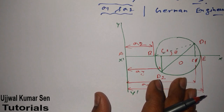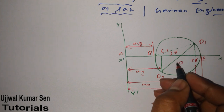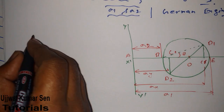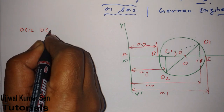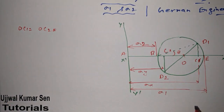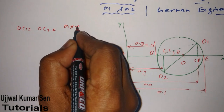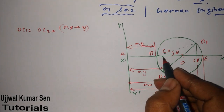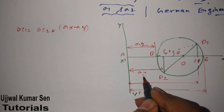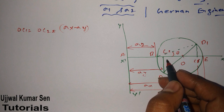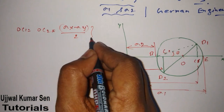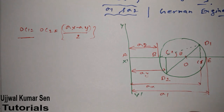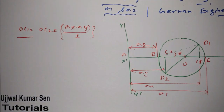We need to choose a few things from the diagram. OC1 and OC2 are the same because I have divided at the midpoint, so OC1 equals OC2. Now, if we do sigma x minus sigma y and divide by two, the remaining part gives us either OC1 or OC2. So OC1 equals OC2 equals (sigma x minus sigma y) / 2. We will use this value in the upcoming steps.